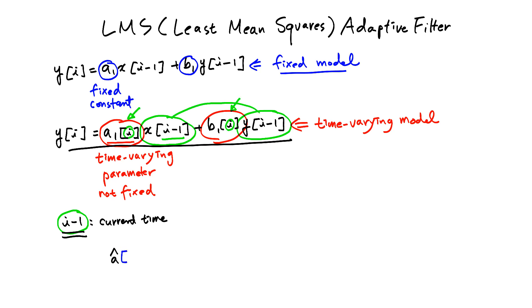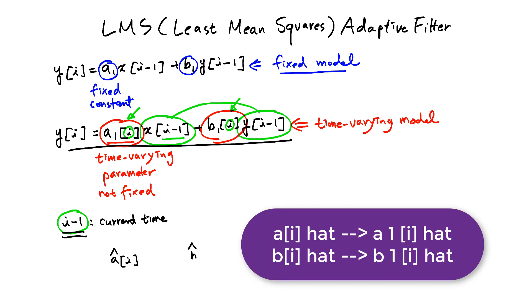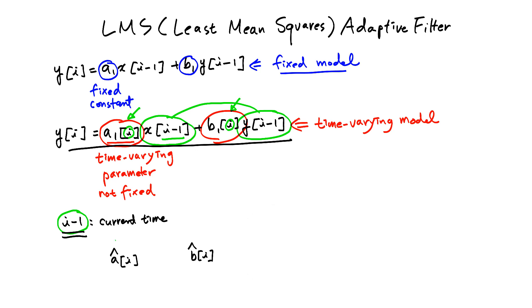Let us assume that we estimate these parameters A of i hat and B of i hat. This symbol hat indicates that these are estimated values. At time i minus 1, these values are available: X of i minus 1 and Y of i minus 1. At this time, if you know these values and if you can estimate these values, actually you can compute future Y value which is Y of i. Since this is also estimated value, because we are getting this value using estimated parameter values, we also want to put this hat sign here indicating that this is also estimated future Y protein concentration.